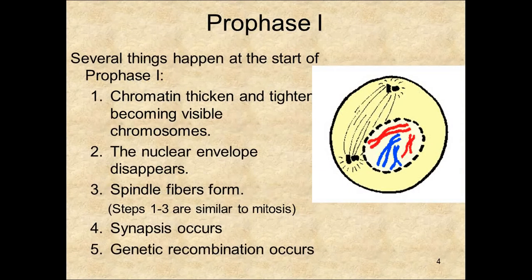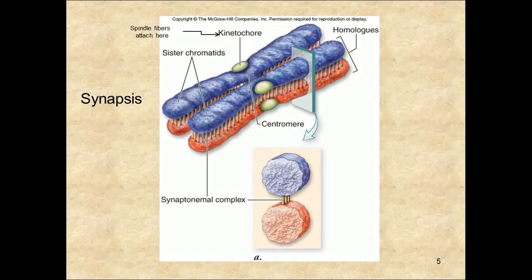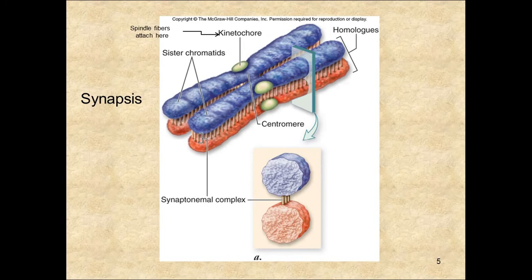Prophase I is both similar to mitosis and different. First, the chromatin become chromosomes, the nuclear membrane disappears, and the spindle fibers and spindle apparatus forms. This is all similar to mitosis. Synapsis and genetic recombination is unique to meiosis. This is the pairing up of homologous chromosomes — for example, mom's number 22 and dad's number 22. Once they're found, they're stacked up, and a framework of proteins called the synaptonemal complex will join them together.